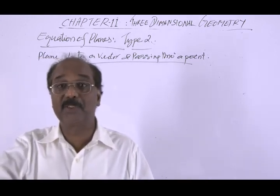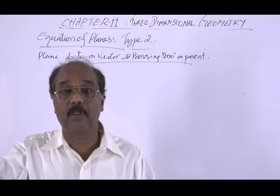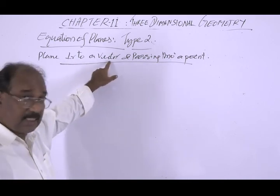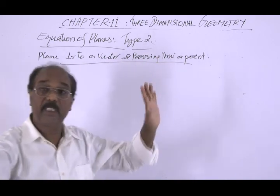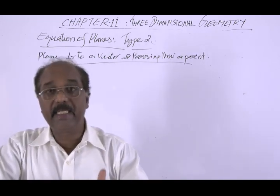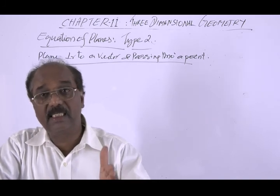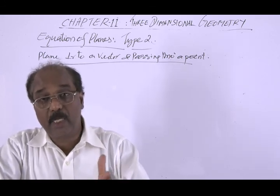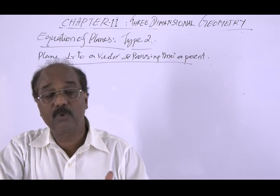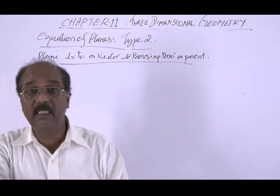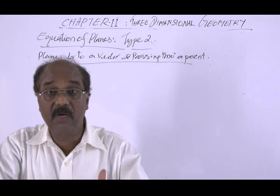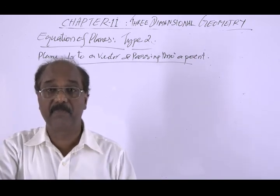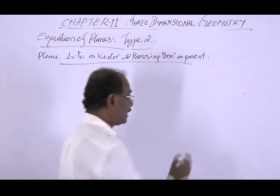Now we derive the equation of the plane type 2. This is the equation of the plane perpendicular to a given vector and passing through a given point. The plane is perpendicular to a given vector, meaning there is a vector which is perpendicular to the plane, and it passes through a fixed point. In vector terms, we have the position vector of that point. So we can derive the equation — let us start with the diagrammatic representation.